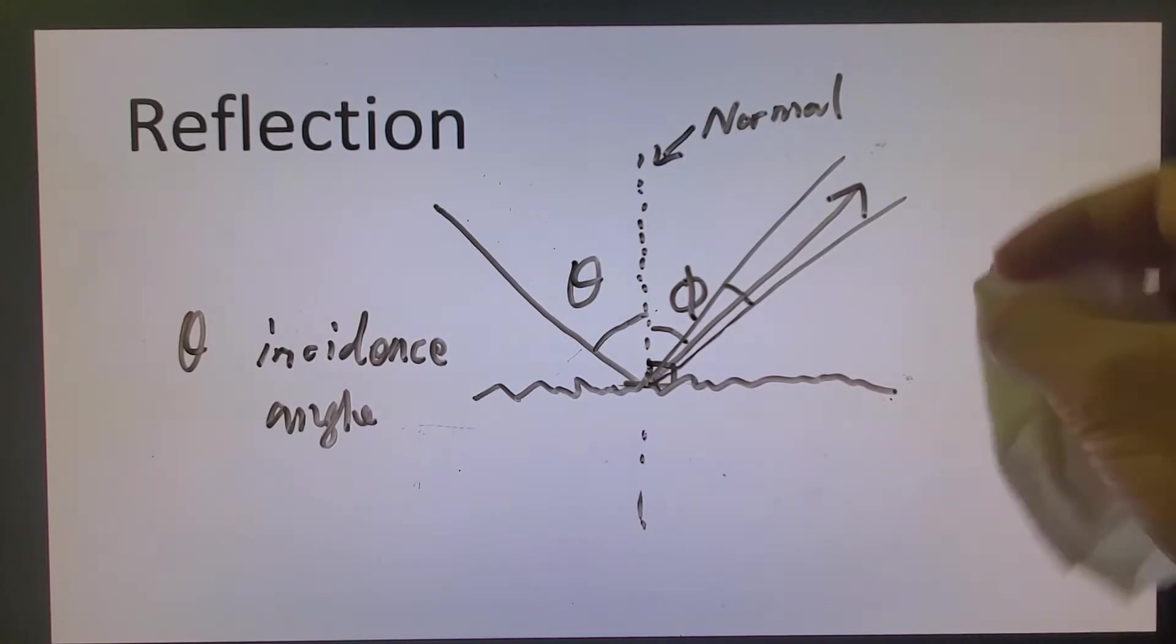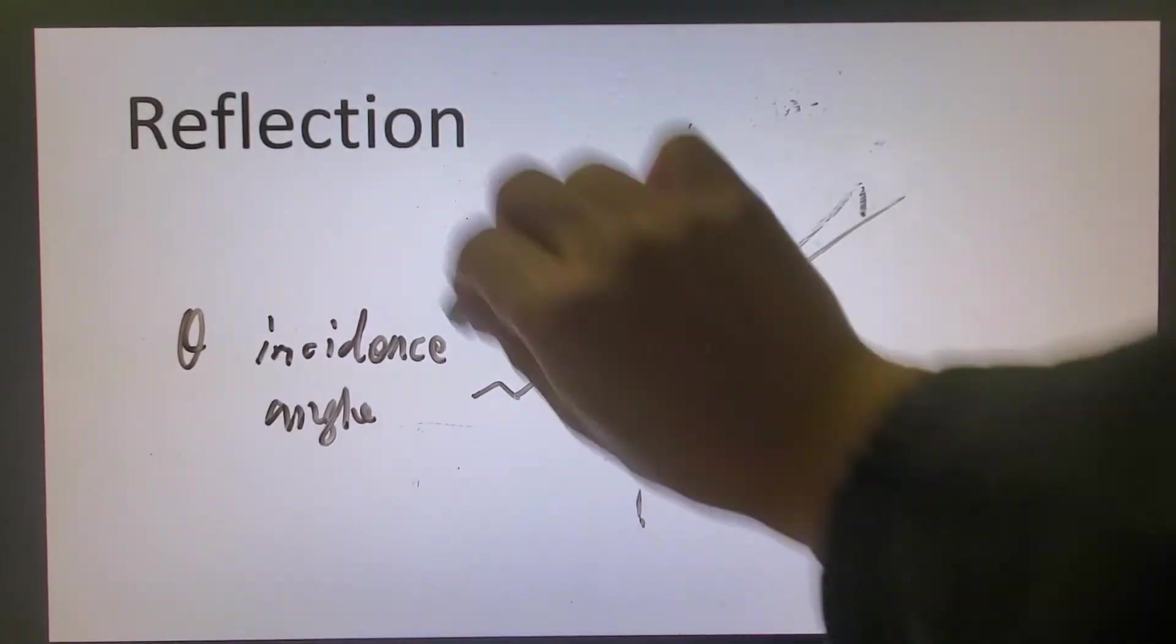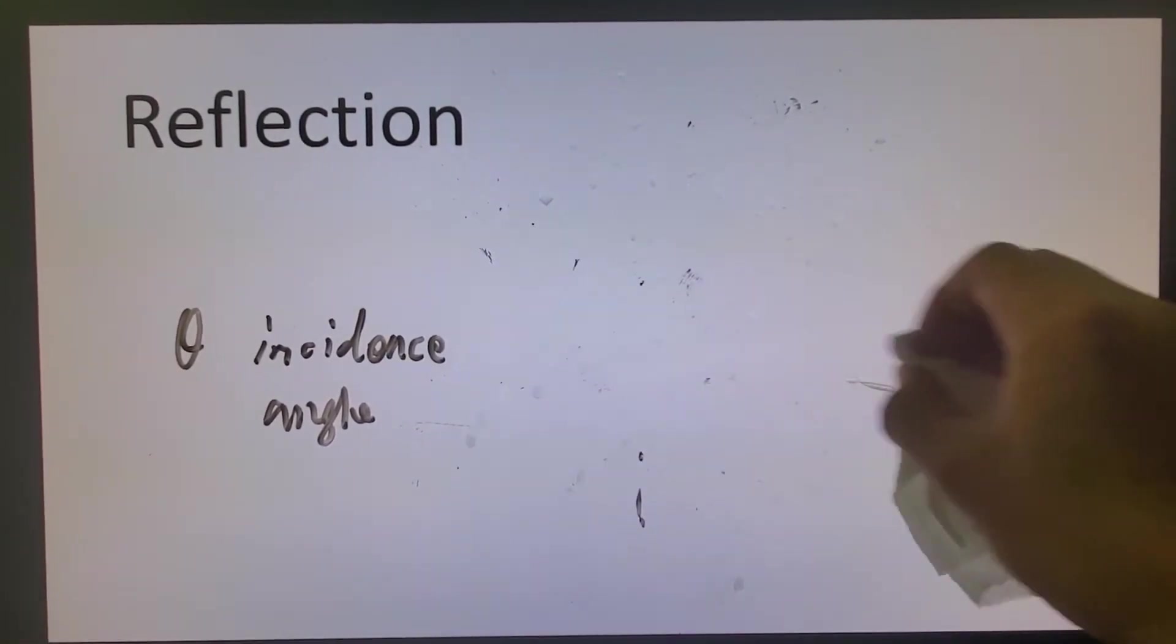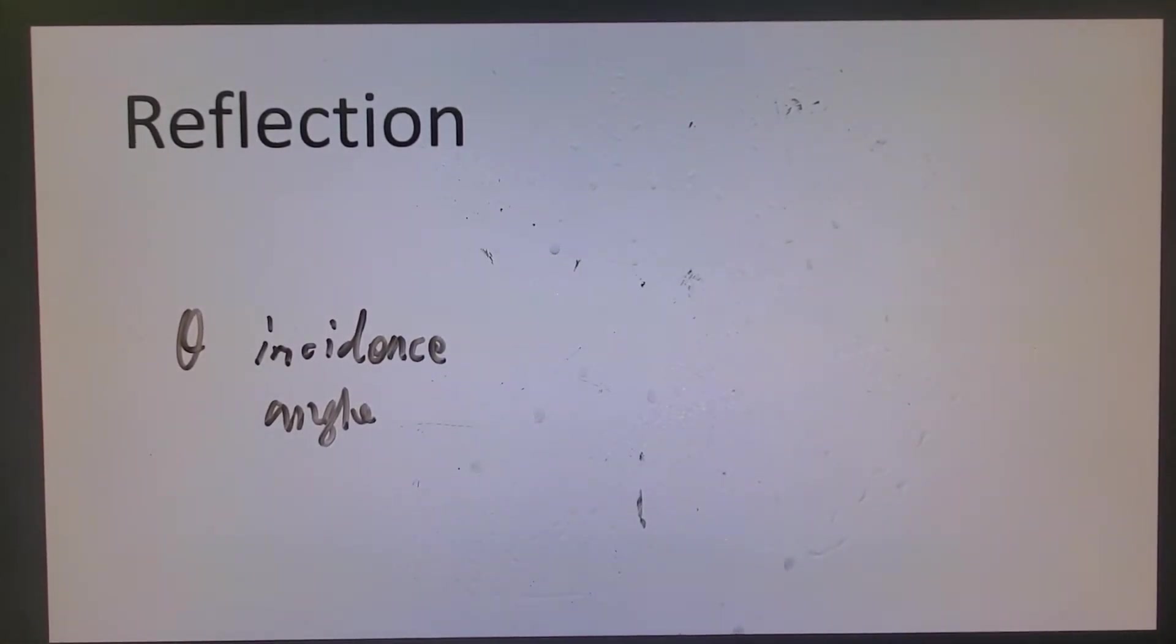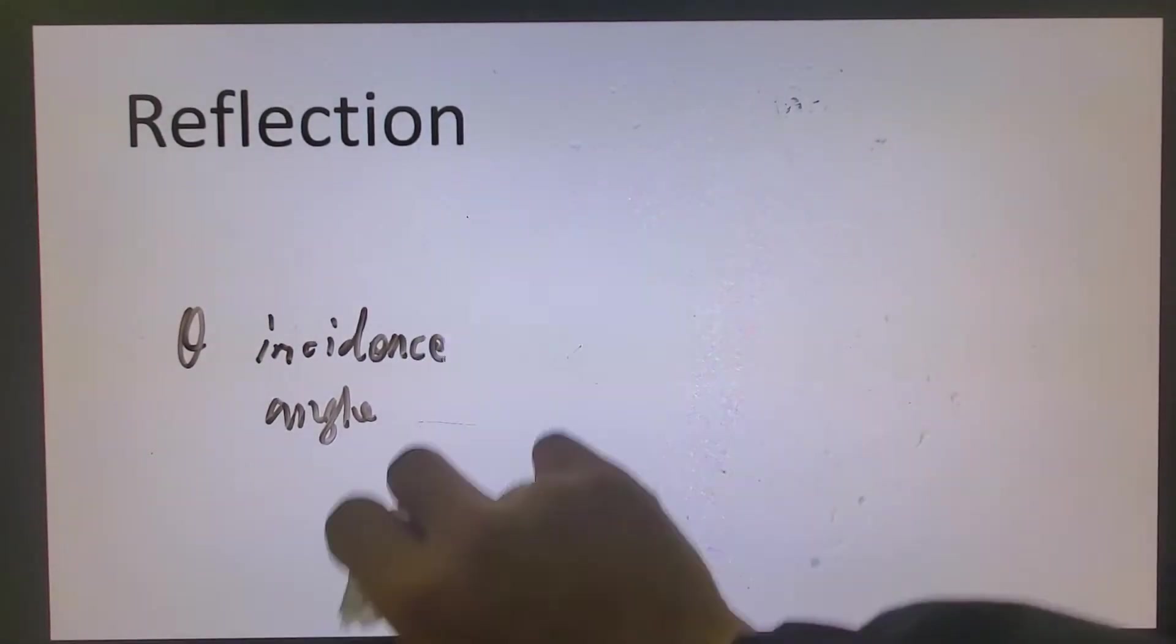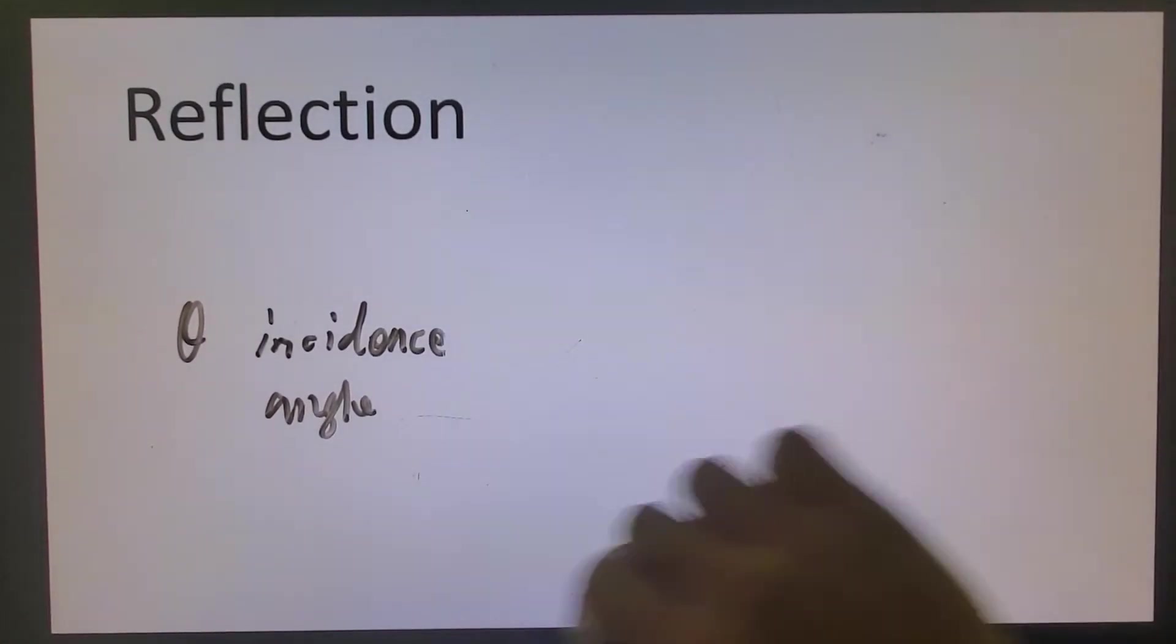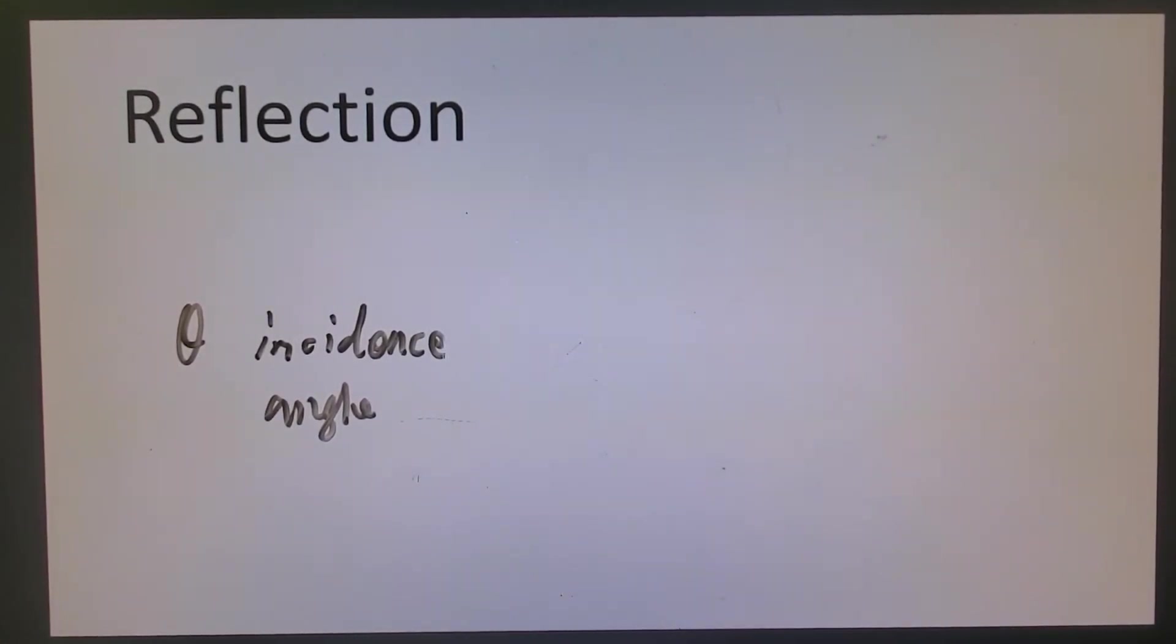There's another property of reflection that is the incident beam, the normal, and the reflected beam. So those three things are in the same plane. What do I mean by that?